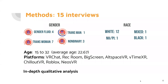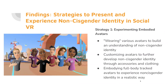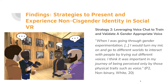We conducted 15 semi-structured, in-depth interviews with non-cisgender social VR users. Regarding our findings, our participants highlight three main strategies they often use to build and experience their non-cisgender identity in social VR. The first strategy is to experiment with embodied avatars in different ways, such as wearing various avatars to build an understanding of non-cisgender identity, customizing avatars through accessories and clothing, and embodying full-body tracked avatars to experience non-cisgender identity in a realistic way. Our participants also leverage voice chat, a predominant way to communicate in social VR, to train and validate their gender-appropriate voices.